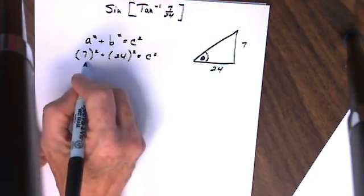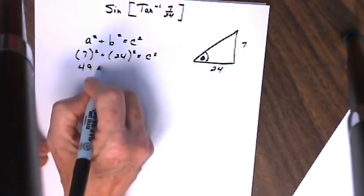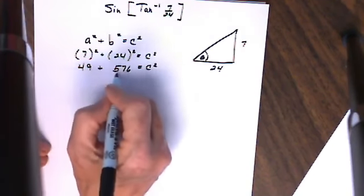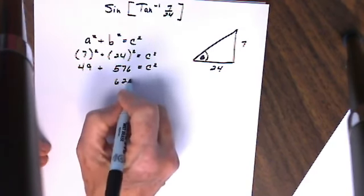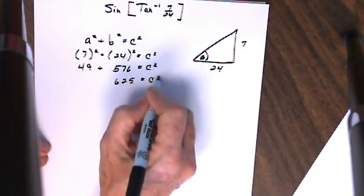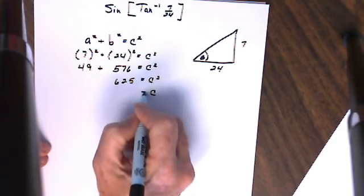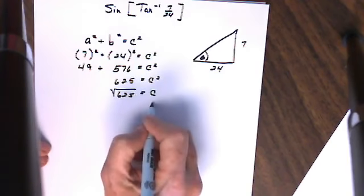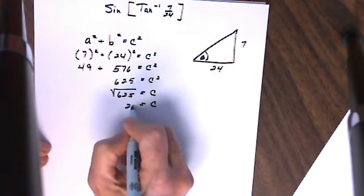I'm going to square both of these which gives me 49 plus 576. When I add these together I get 625 is equal to c squared and to get the length of side c I take the square root of 625 which is 25 units long.